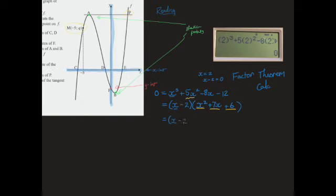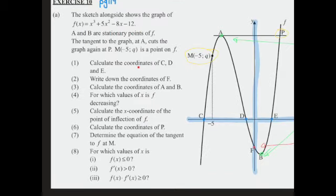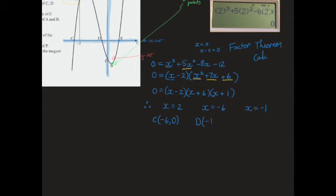Now it's a matter of doing the trinomial. We've got x minus 2, and the trinomial: the first term will be x and x, and the last terms will be 6 and 1. It equals 0, so that means x is 2, or x is negative 6, or x is negative 1. We've done some great maths and we've got some answers, but we need to be careful — the question asks us to find the coordinates of c, d, and e. They want us to say that coordinate c has a value of negative 6 and 0, coordinate d has a value of negative 1 and 0, and e has a coordinate of 2 and 0.